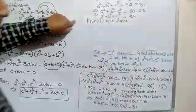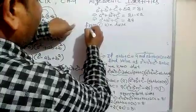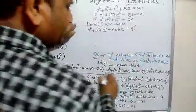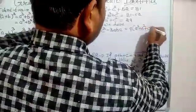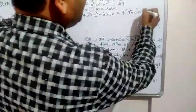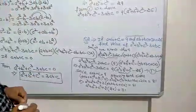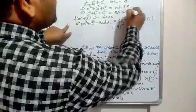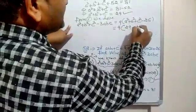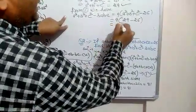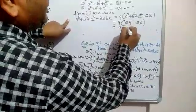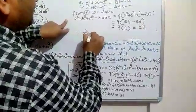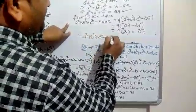From equation 1, a cube plus b cube plus c cube minus 3abc equals 9 into a square plus b square plus c square minus 26. Substituting the value of a square plus b square plus c square as 29, it equals 9 into 29 minus 26, which is 9 into 3, equals 27. So finally, a cube plus b cube plus c cube minus 3abc equals 27, which is our required value when a plus b plus c equals 9 and ab plus bc plus ca equals 26.